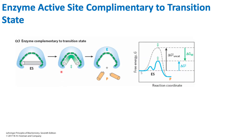Now looking at the enzyme active site complementary to the transition state: if we look at our enzyme, we can see that our substrate does not bind perfectly in there, but once it distorts, the substrate is able to bind. The enzyme is actually forcing the substrate to change its shape — to distort — in order to fit inside, and this distortion is actually favorable; it releases energy.